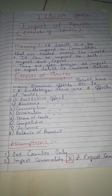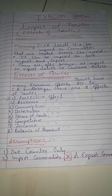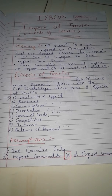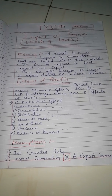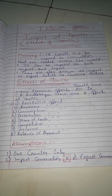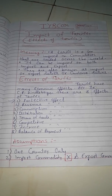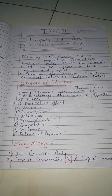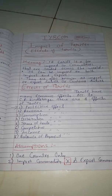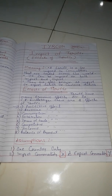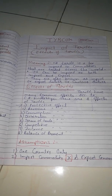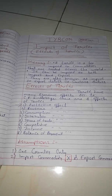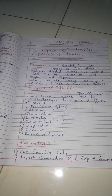A tariff is a tax imposed on commodities that are traded across the world. It can be imposed on both import and export, and is also known as import and export duties or custom duties. In short, tariff means a type of duty or tax levied on commodities that we export or import at the international level.